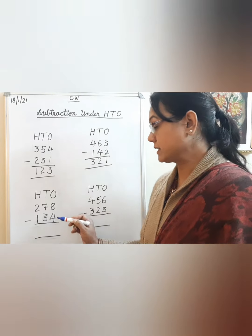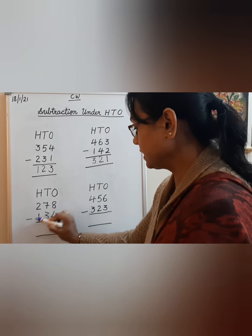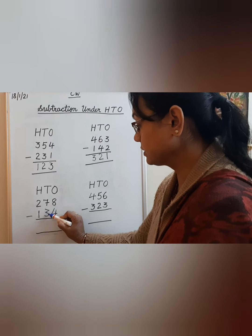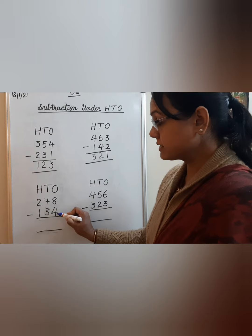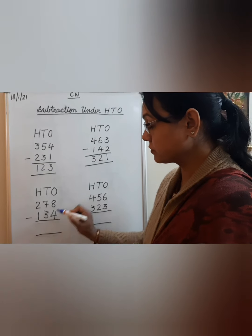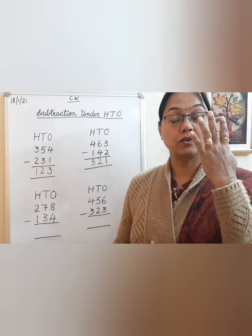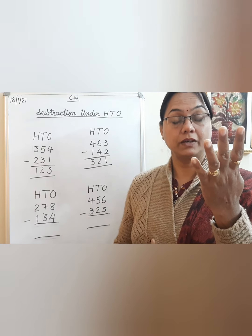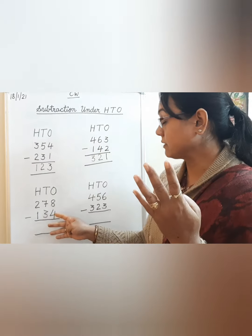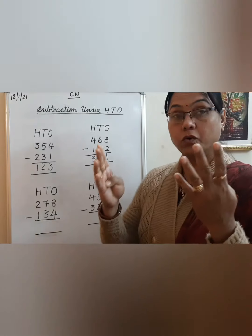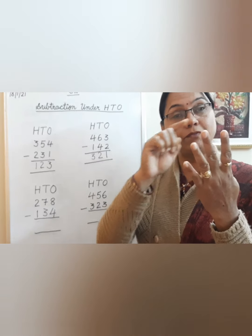Now let us move to the next sum: 278 minus 134. Again we will start from the ones place: 8 minus 4. Take out 8 fingers — 4 in one hand and 4 in another hand — and subtract 4: 1, 2, 3, and 4 — how many are left? 1, 2, 3, and 4.